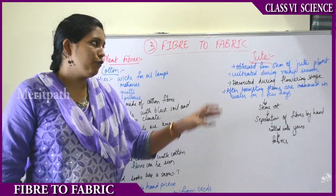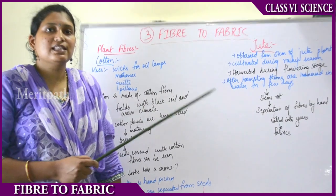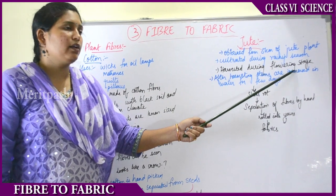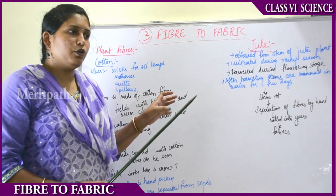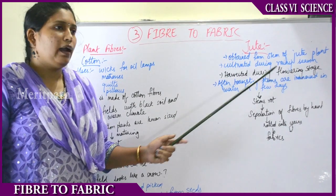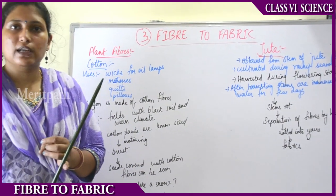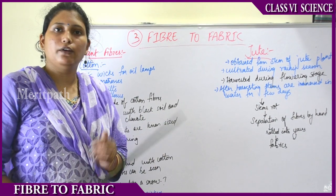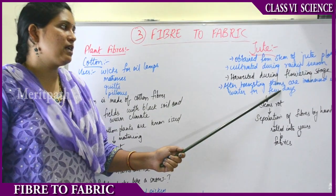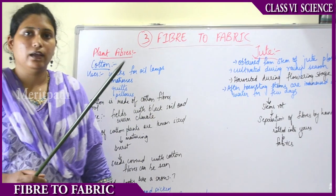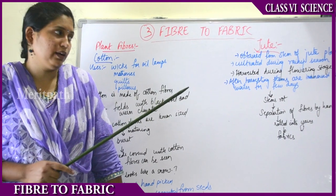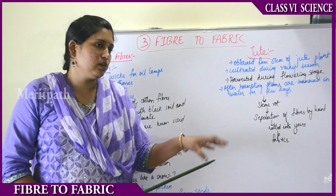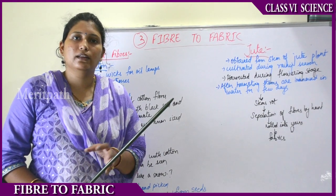Now moving on to jute — jute is also a plant source fiber obtained from the stem of the jute plant. It is cultivated during the rainy season, unlike cotton which grows in warm climate. Jute is harvested during the flowering stage — as soon as the flower develops it is cut from the plant. After harvesting, the stems are immersed in water for a few days.